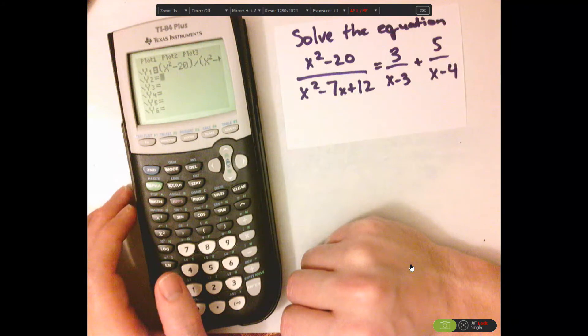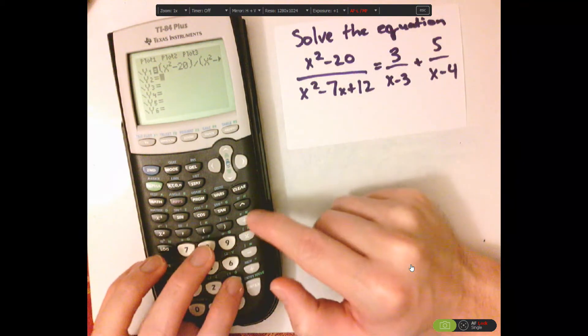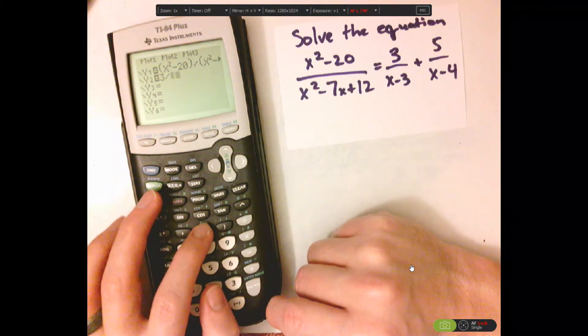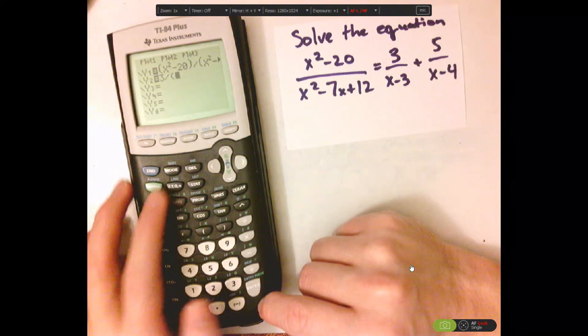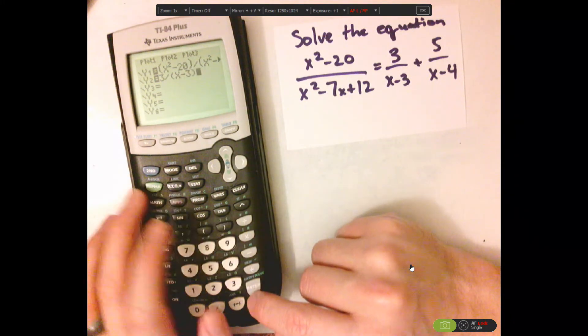So, that's our first curve, and then we're going to type this in. So, 3 divided by, parentheses, x minus 3, closed parentheses,